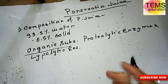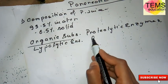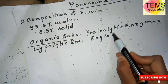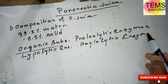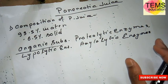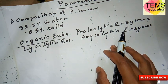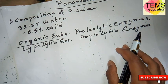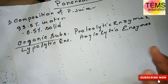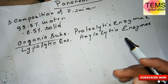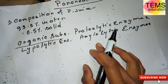The amylolytic enzymes are pancreatic amylase. Other organic substances present in pancreatic juice are albumin and globulin, though these are present in very small amounts. These are the organic substances present in pancreatic juice.